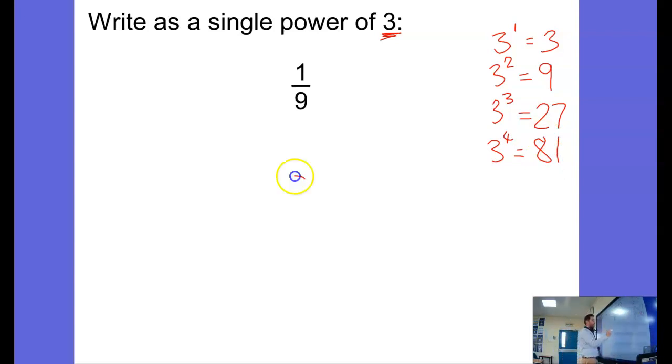So in this case I know that that bottom number is 3 squared. So I've got 1 over 3 squared. So to write this as a single power of 3, I can write it as 3. The 1 over gives me where I have the negative, and then squared, or negative 2. So 1 over 9 is the same as 3 to the power of negative 2.